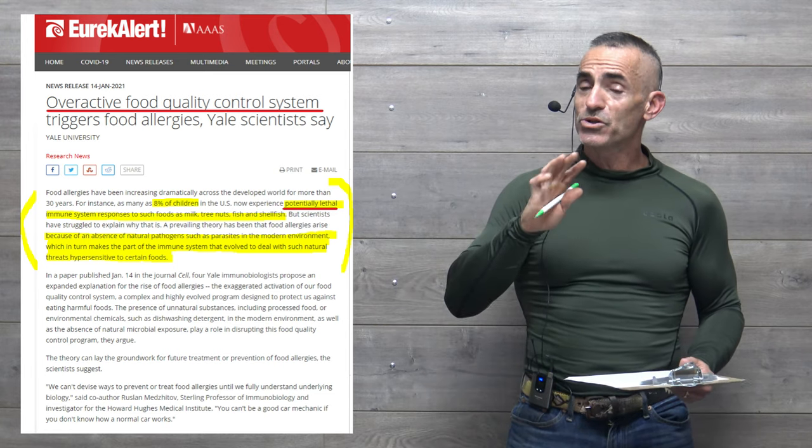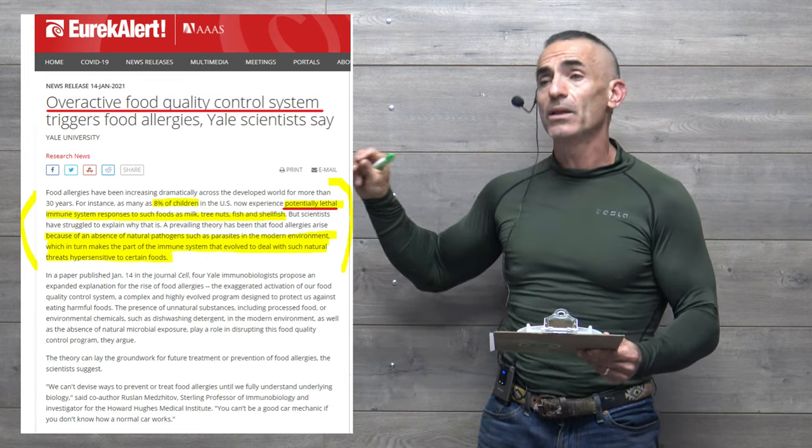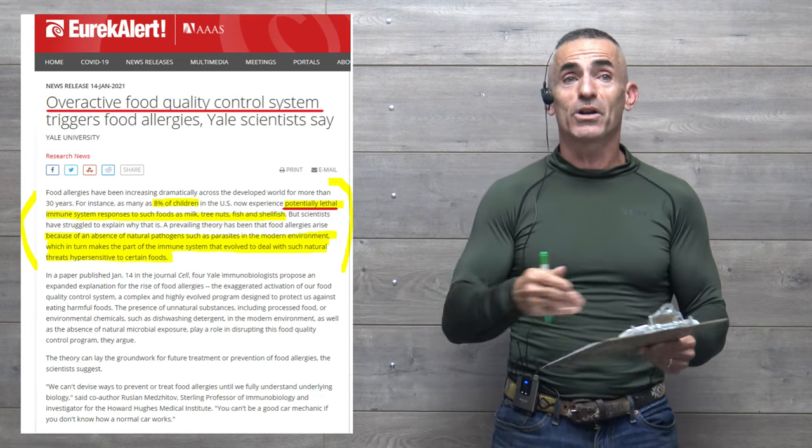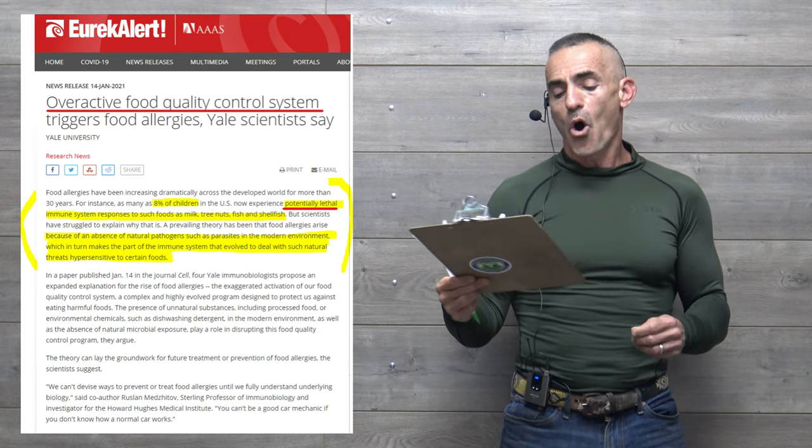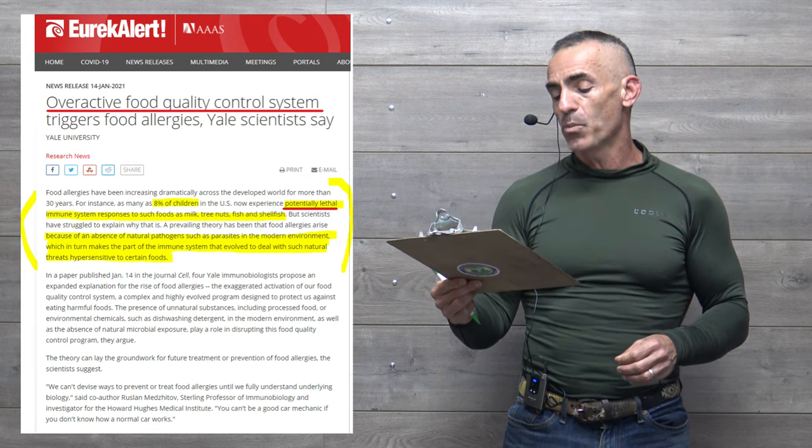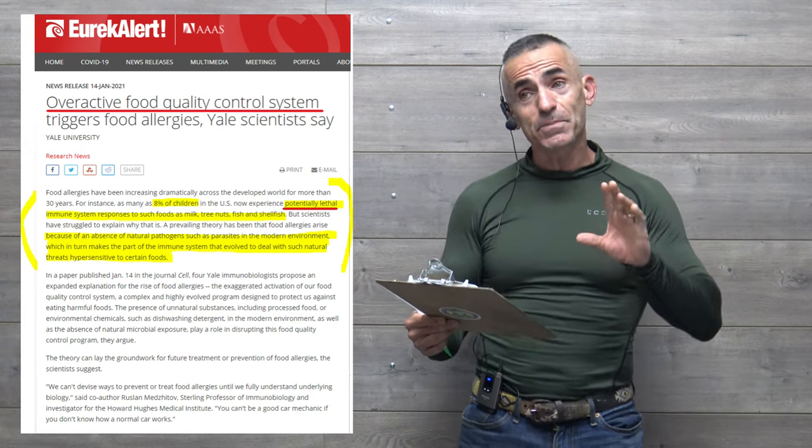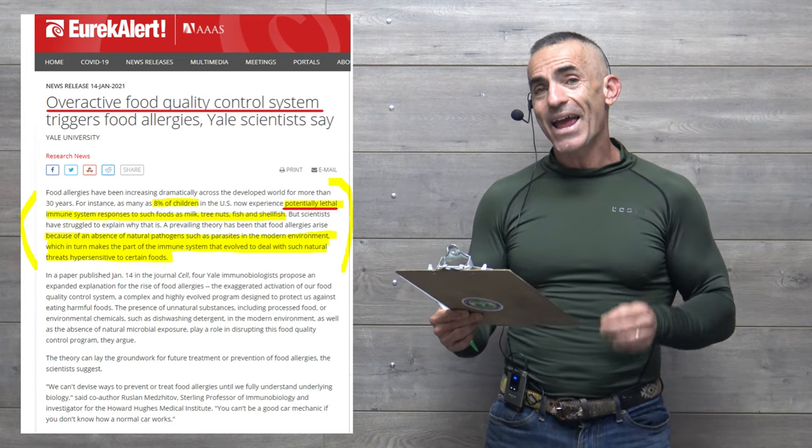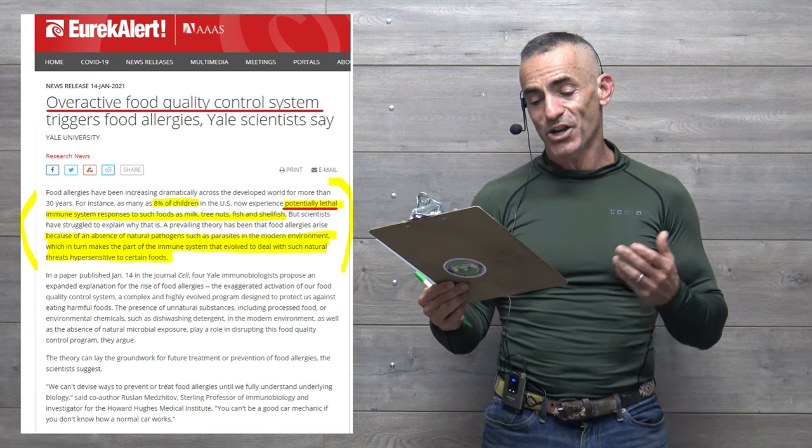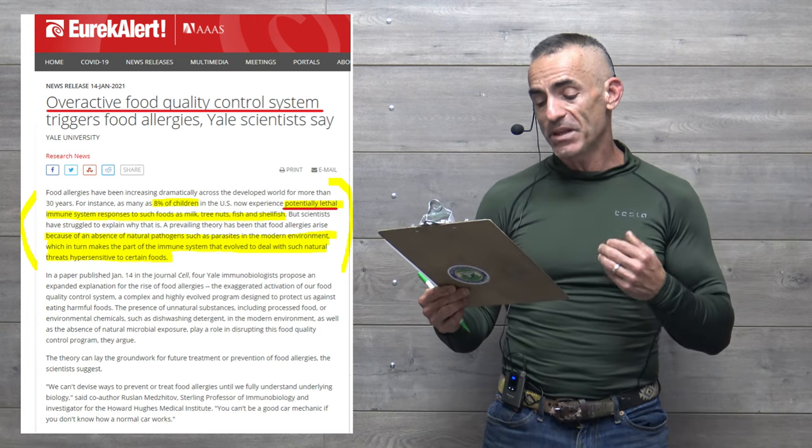I also promised to cover this—an interesting study from Yale that goes to the sanitation aspect once again. Overactive food quality control system triggers food allergies. Food allergies have been increasing dramatically across the developed world for more than 30 years. As many as 8% of U.S. children now experience potentially lethal immune system responses to such foods as milk, tree nuts, fish, and shellfish.